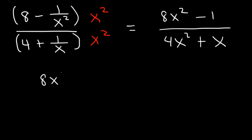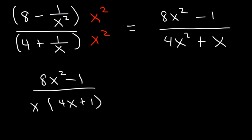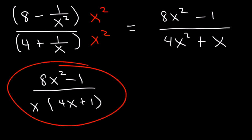But in the denominator, we can take out an x if we want to, leaving behind 4x plus 1. So we'll leave it like this.